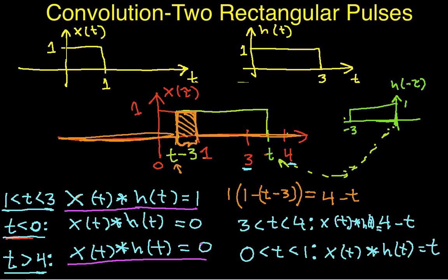Okay, at the end of the last video, part 3, we had come to the conclusion that for t between 3 and 4, we have 4 minus t as the value of the convolved signals.